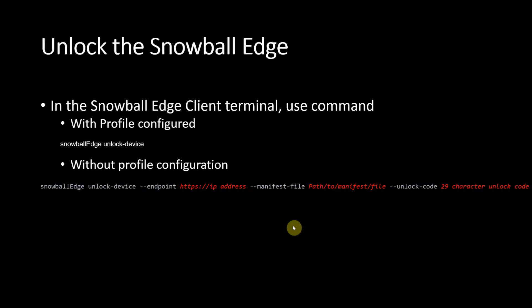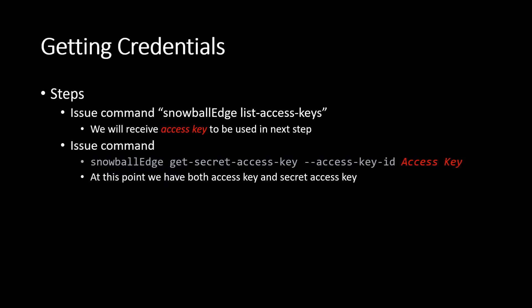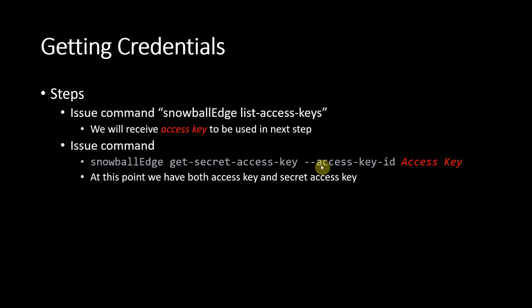After that, your Snowball Edge should be unlocked — it will take some time, but you can issue a command to check the device status. Once it's unlocked, you can get the access key and secret access key by running 'snowball edge list access keys'. Once you have the access key, you use it in the next command, 'snowball edge get secret access key', and you should get both keys.